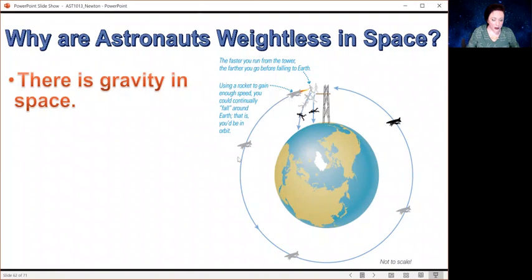If they can run fast enough off that platform, they can put themselves into orbit. And they're still falling. They're falling toward the Earth all the time. But that curvature that they're falling with is the right curvature so that it stays in orbit around the Earth.